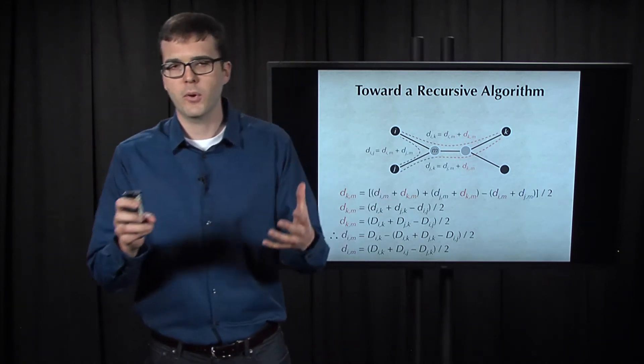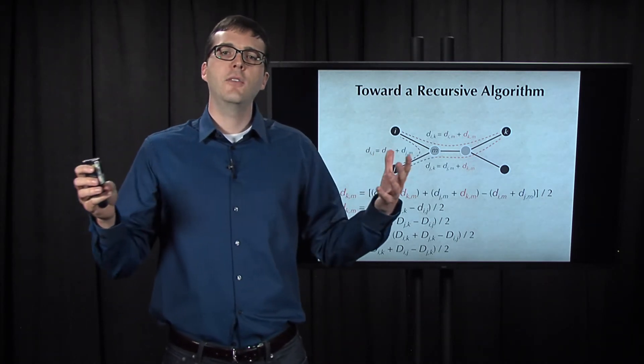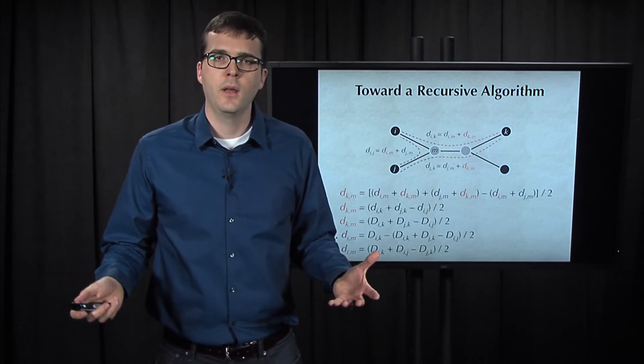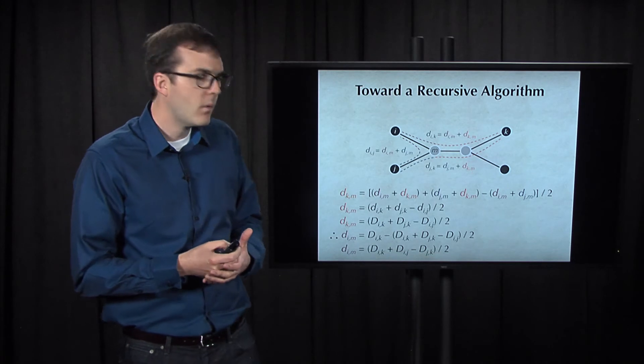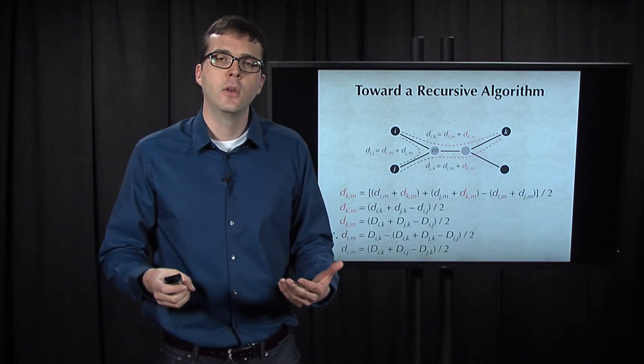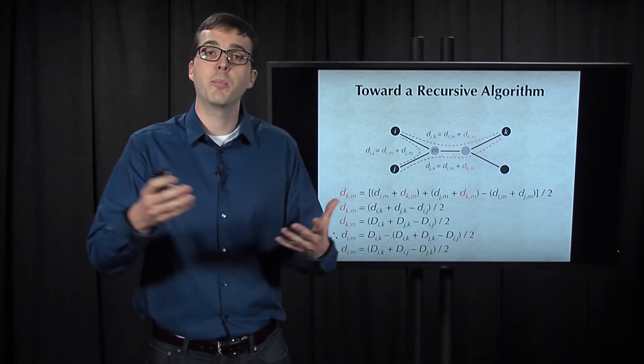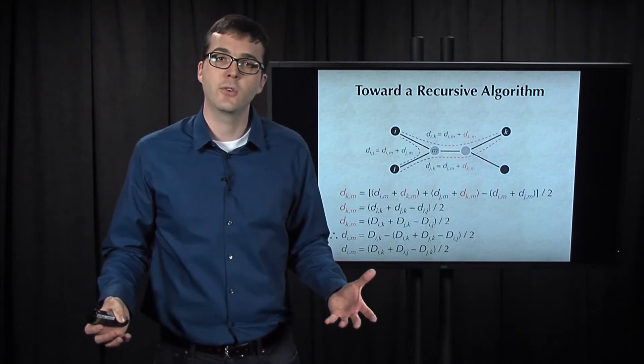Now, please remember here that our choice of k was completely arbitrary. It was just any leaf other than the neighboring leaves i and j. So if you know that i and j are neighbors, you can compute the distance from them to their parent just from the distance matrix alone.